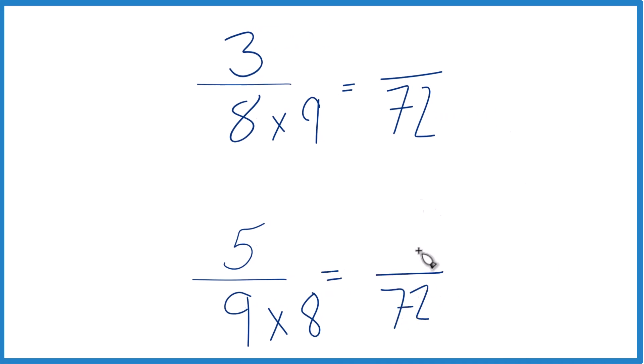So now denominators are the same. But I can't just multiply the denominator here by 8. I also have to multiply the numerator by 8. That's because 8 over 8, that's just 1. So I'm just multiplying by 1. I don't change the value, just the way it's represented. 5 times 8 is 40.